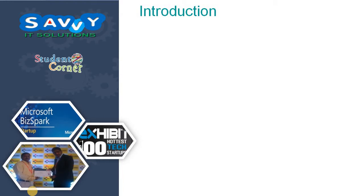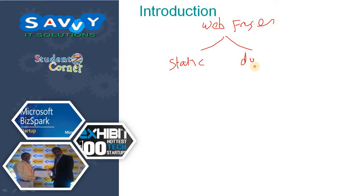A website is a collection of web pages, and web pages are of two types. One is static websites and the second one is dynamic websites. Static websites means we cannot change them — they are only for the purpose of reading. Dynamic websites means the data will be changed dynamically at runtime.